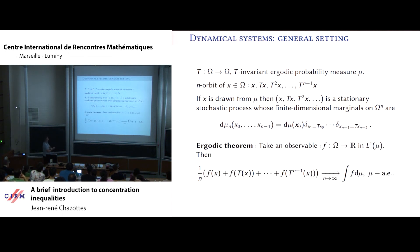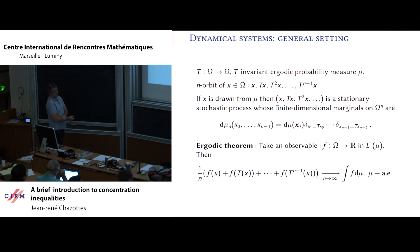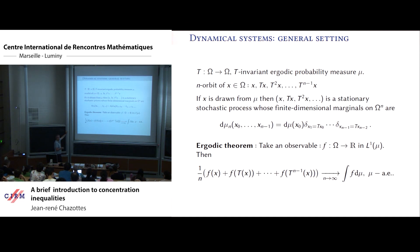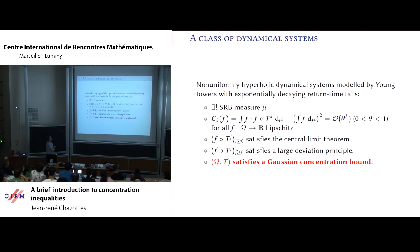The basic result is the ergodic theorem: if you take a nice observable, the Birkhoff average converges mu-almost surely to the integral of f with respect to mu. Of course, to understand the fluctuations of this Birkhoff average you need more assumptions. I will discuss a class of dynamical systems for which one can prove nice results about fluctuations and show how to prove the concentration inequality — this is my goal.